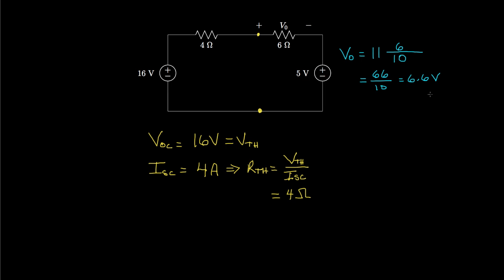So that's an example of how we use the Thevenin equivalent circuit to determine an unknown voltage in a circuit.